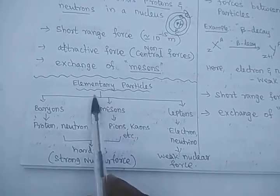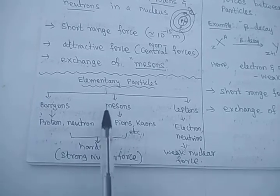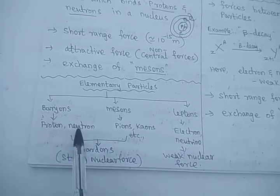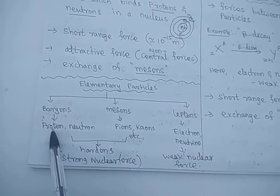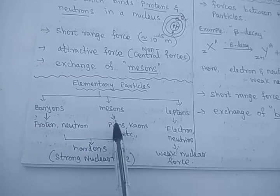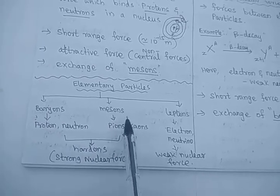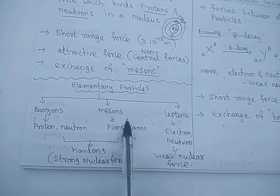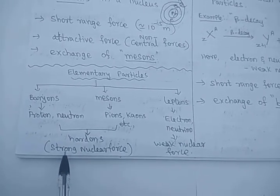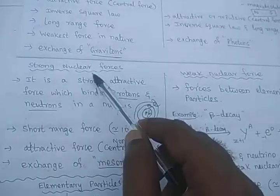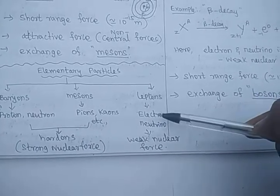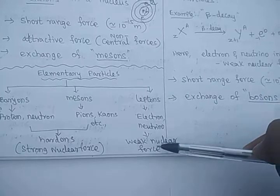Elementary particles are classified into three broader categories: the first is baryons, the second is mesons, and the third is leptons. Baryons means protons and neutrons, which are present only in the nucleus. Mesons include pions and kaons — some elementary particles. Baryons and mesons combined together are commonly called hadrons, and these obey the strong nuclear force. Only leptons — that is, electrons and neutrinos — obey the weak nuclear force.